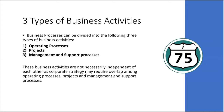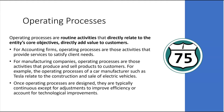Operating processes are your routine activities that directly relate to the entity's core objectives and directly add value to the firm's customers. For accounting firms, operating processes are activities that provide services to satisfy client needs. For a manufacturing company, they're activities that produce and sell products. For example, Tesla's operating processes relate to the construction and sale of electric vehicles. Once designed, operating processes are typically continuous except for adjustments to improve efficiency or account for technological improvements.